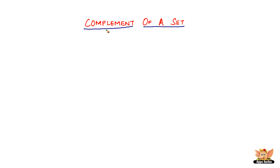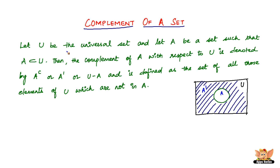In this video, let us look into another operation on sets, which is the complement of a set. Here we have the explanation — it's a very simple one. Let U be the universal set and let A be a set such that A is a subset of U. The whole big box is called the universal set, and within it we have a set A.